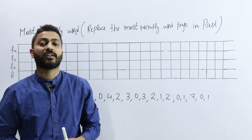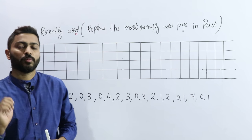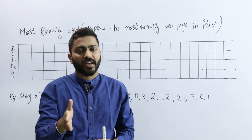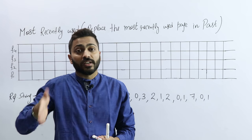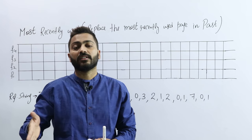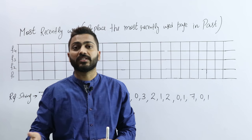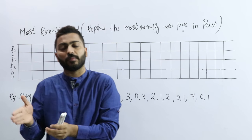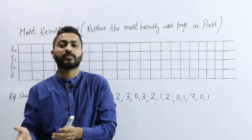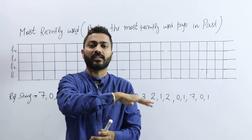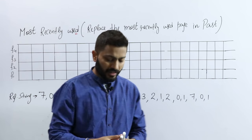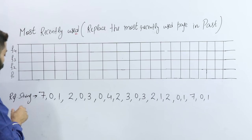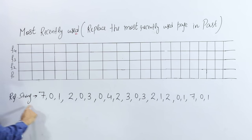MRU, that is Most Recently Used. In the Most Recently Used method, we replace the page which was used most recently — the page whose demand just occurred. We replace that page first with the fresh page. Let's solve it with a question.